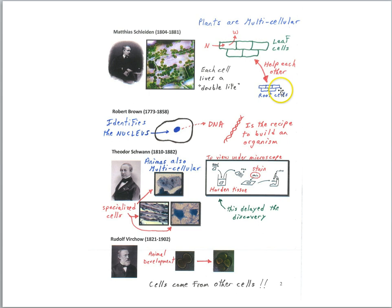The root cells will be absorbing water and delivering water to the leaf cells, and leaf cells will be doing photosynthesis and making sugar and then deliver the sugar down to the root cells to keep them alive. There is a cooperative effort going on in multicellular organisms. That's what he means by a double life. Cells are alive but they must cooperate to ensure that the whole organism is alive.